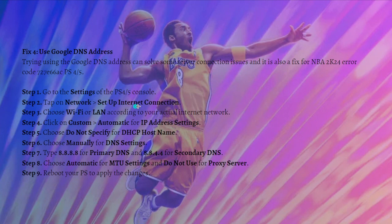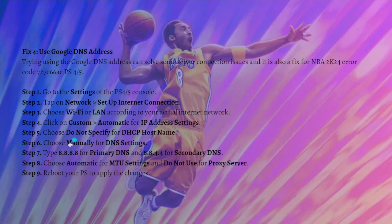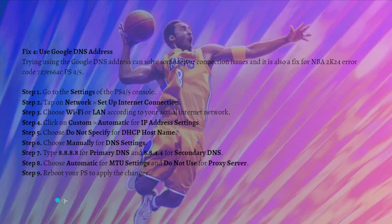Tap onto Network, then select 'Set Up Internet Connection'. Choose Wi-Fi or LAN according to your actual connection, then click Custom. Set the IP address to Automatic, choose 'Do Not Specify' for the DHCP host name, then choose Manually for the DNS settings. Enter 8.8.8.8 for the primary DNS and 8.8.4.4 for the secondary DNS. Set MTU to Automatic and Proxy Server to 'Do Not Use', then reboot your PS console to apply the changes.